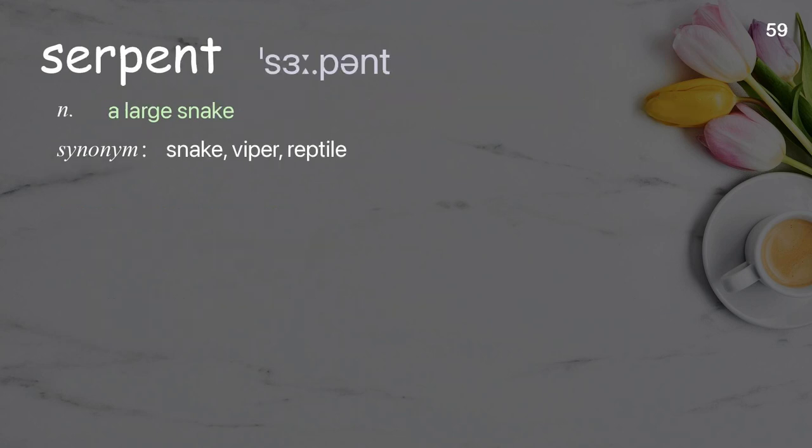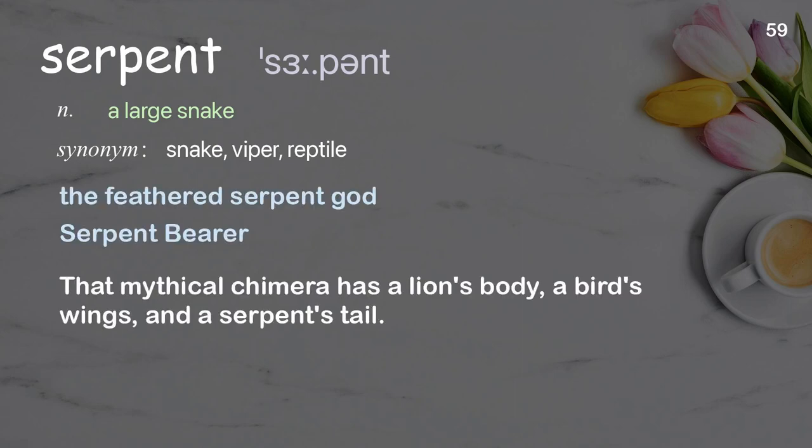Serpent: A large snake. Examples: the feathered serpent god, serpent bearer. That mythical chimera has a lion's body, a bird's wings, and a serpent's tail.